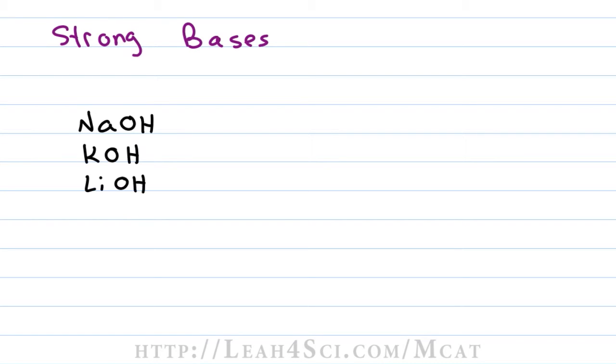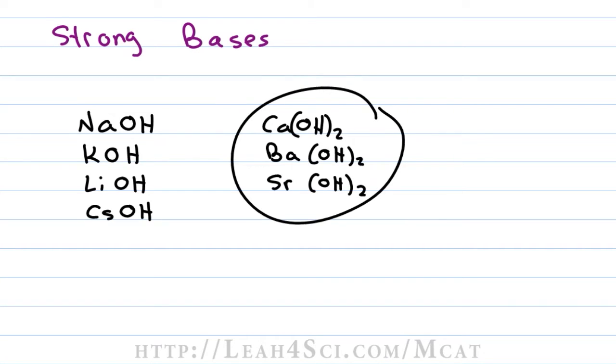Here's a list of some of the strong bases you want to memorize for your MCAT: hydroxides paired with your alkali metals which are group one on the periodic table and the alkaline earth metals which are group two on the periodic table. But the alkaline earth have two hydroxides so don't forget to account for them in your calculations.